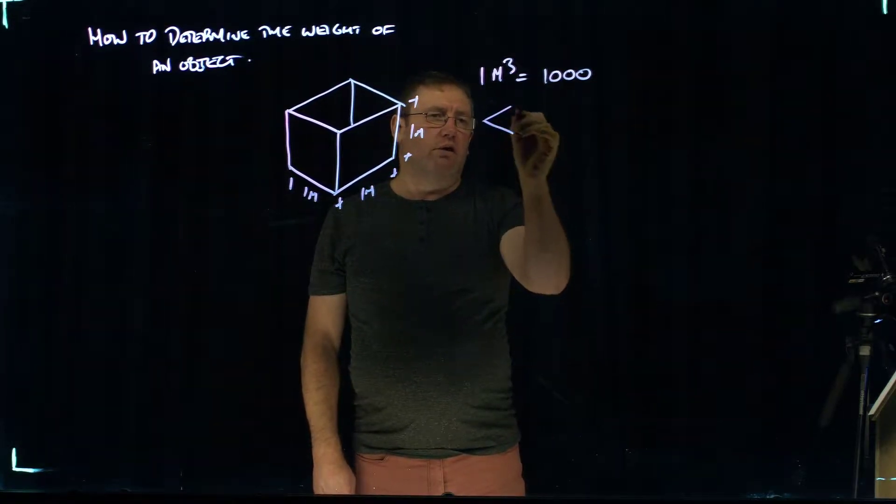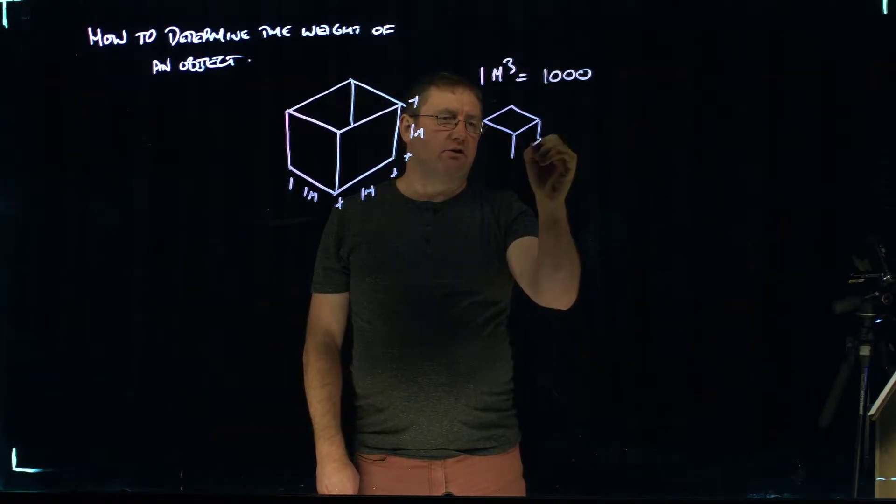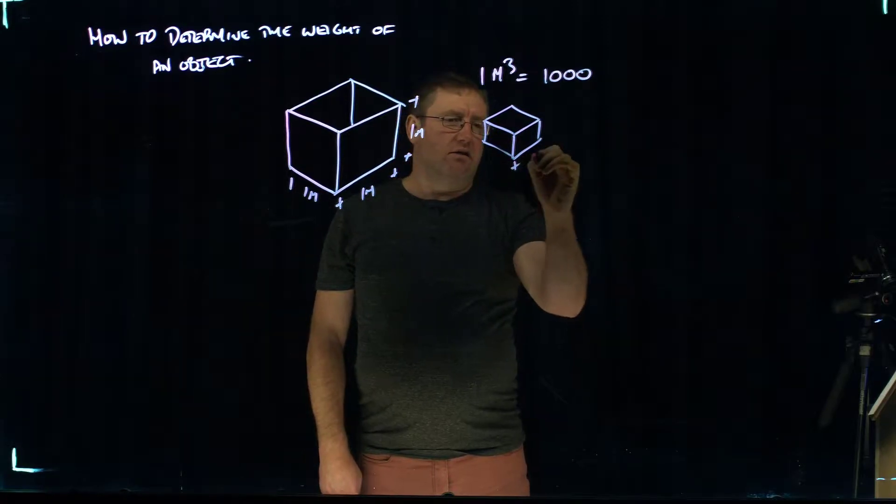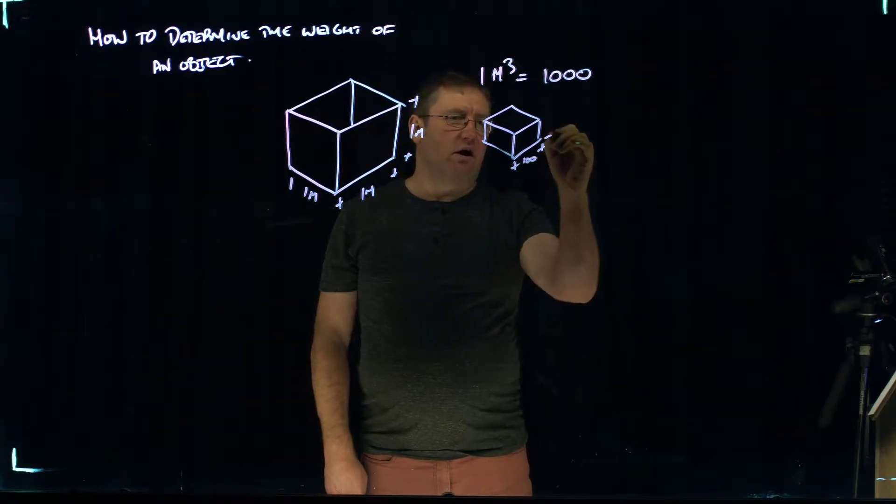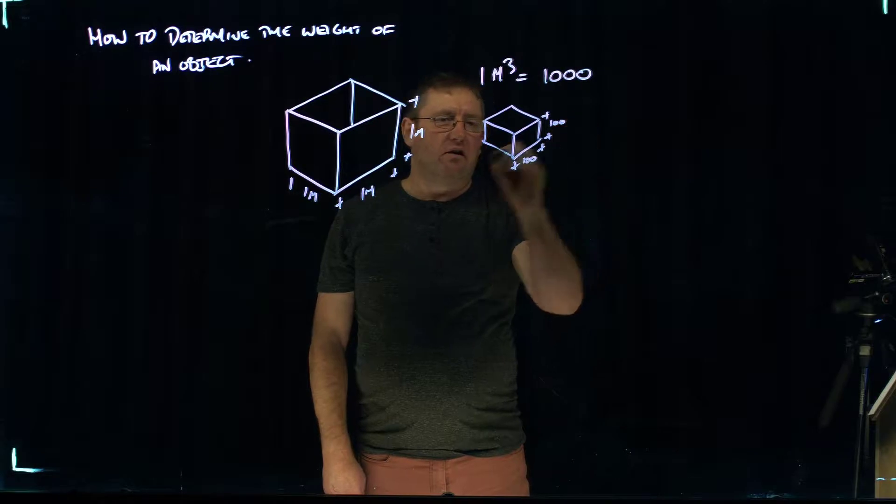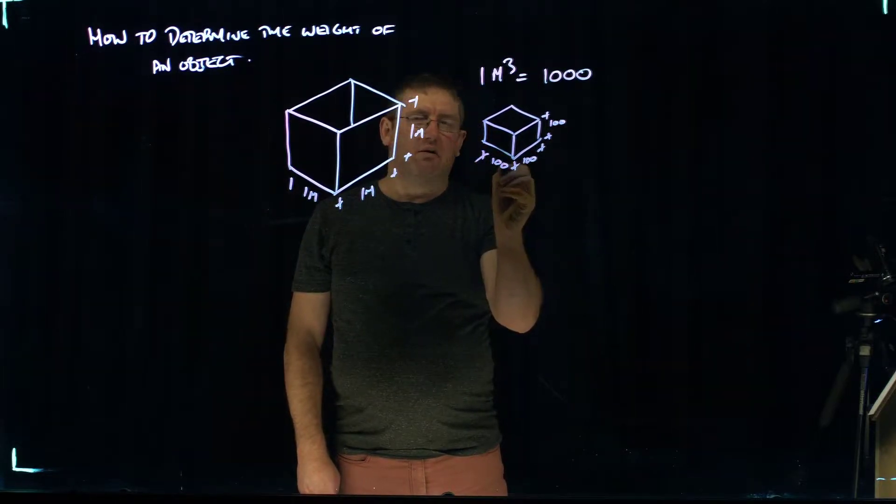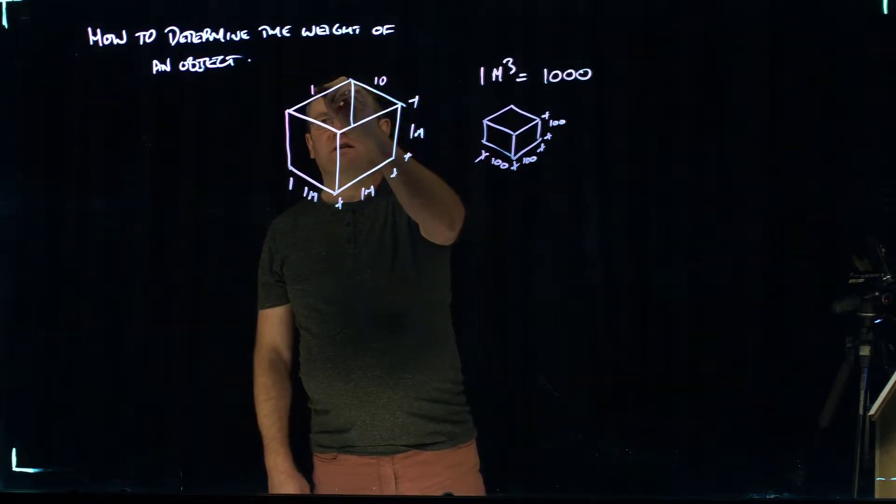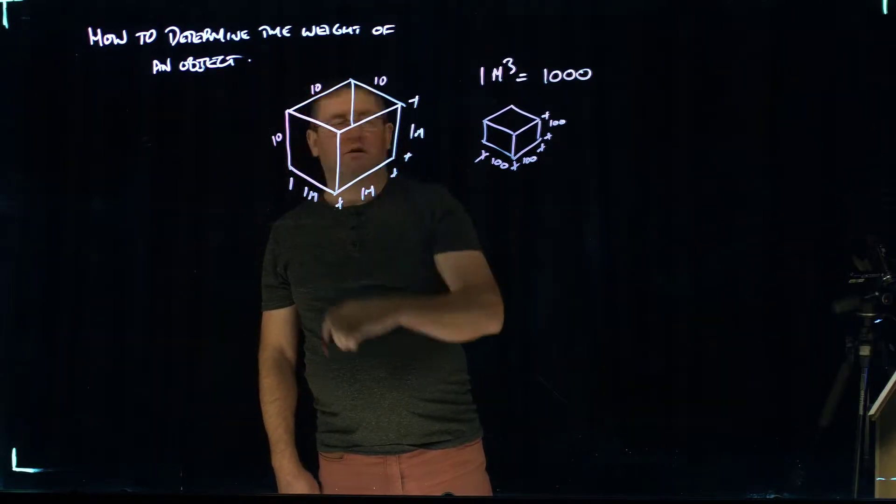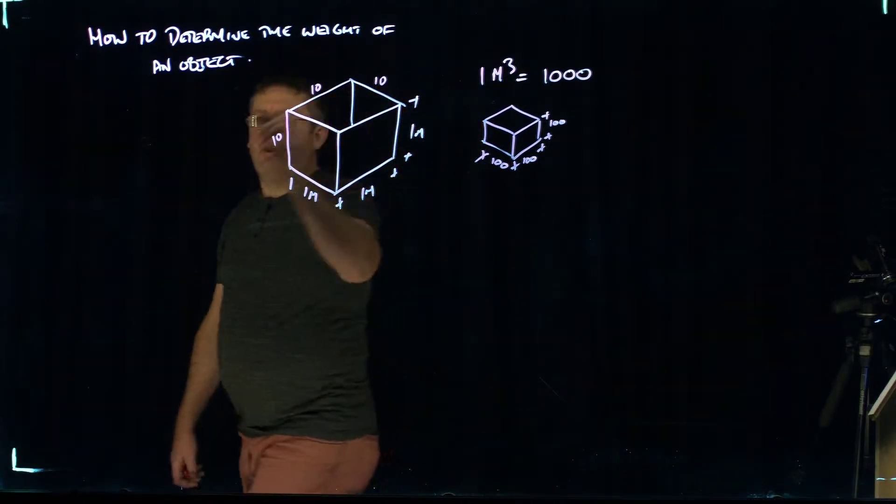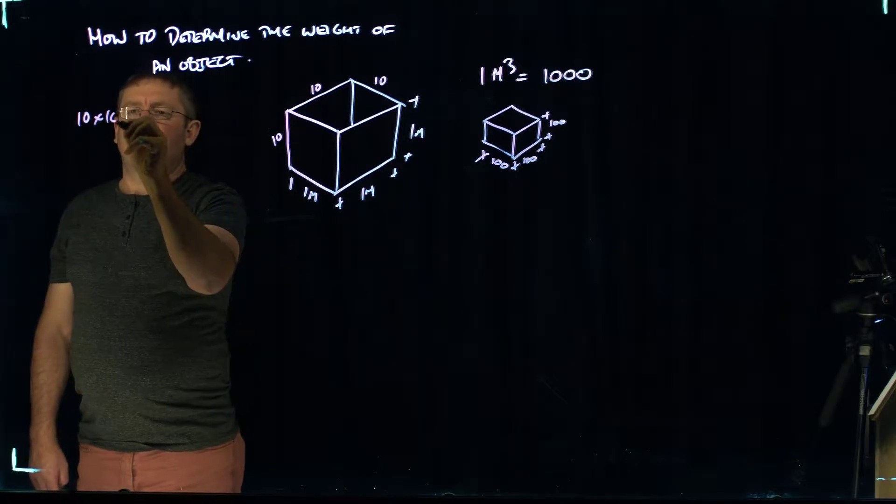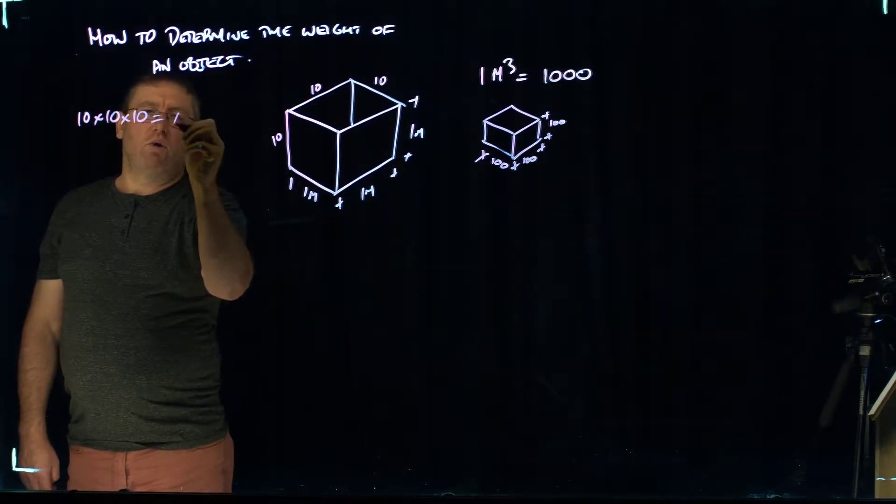So the size for working out the literage, that is 100 millimeters by 100 millimeters high and 100 millimeters deep. That fits into a meter 10 times across there, 10 times across there, and 10 times across there. So 10 times 10 times 10 equals 1,000.